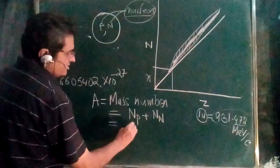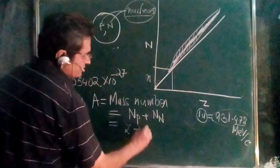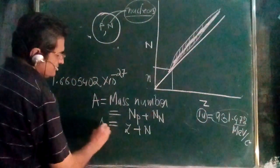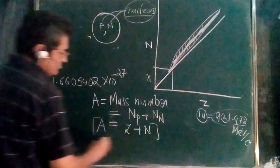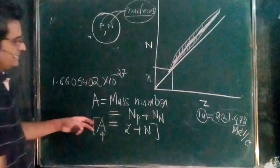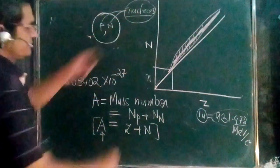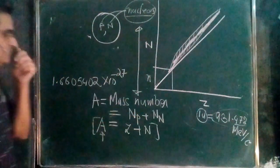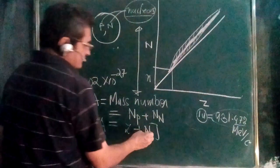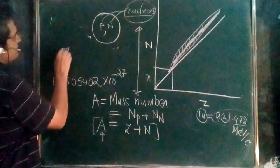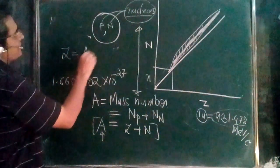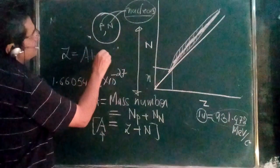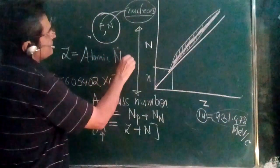I write the number of protons as Z and the number of neutrons as N. This is the formula you should remember: A equals Z plus N. The mass number and number of nucleons are the same. Z is also called the atomic number - don't confuse this with atomic weight.